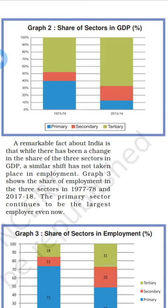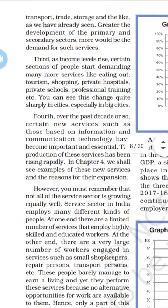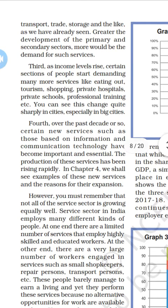Here we can see the graph showing the share of each sector in Gross Domestic Product, given as percentages. In 1973-74, the primary sector was more developed, but by 2013-14 the tertiary sector has developed more compared to the primary sector. As income levels rise and more people are involved in all sectors, demand for services also increases.